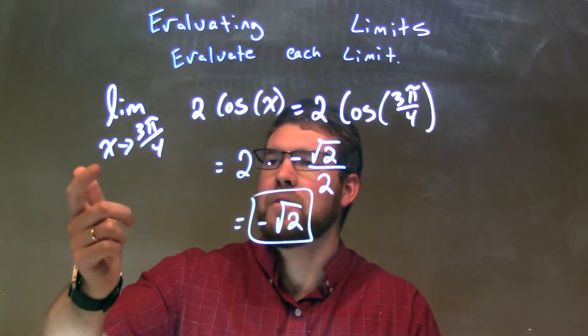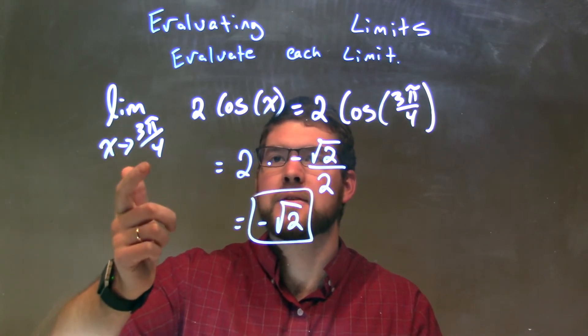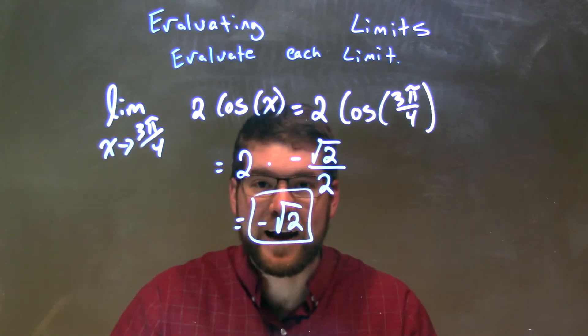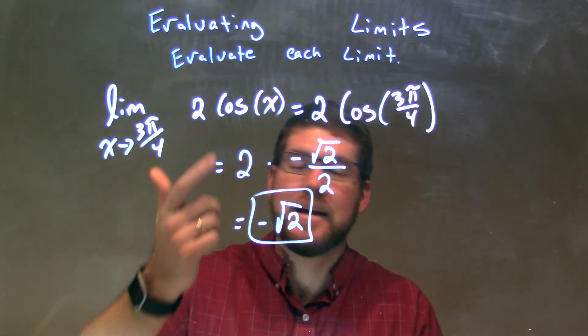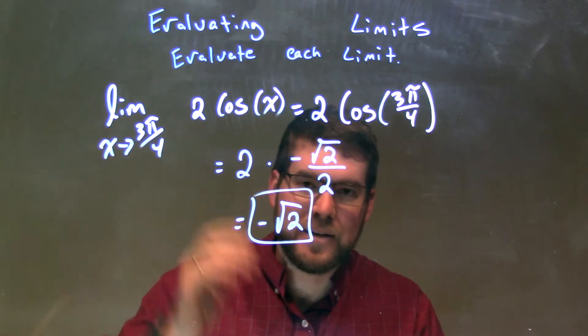So let's recap. The limit as x approaches 3π/4 times 2 cosine of x. Cosine being a trig function, we plug x directly in, or 3π/4 directly in for x there.